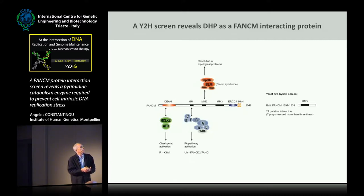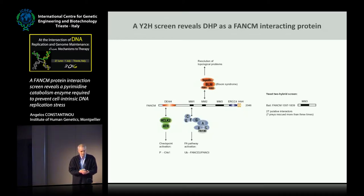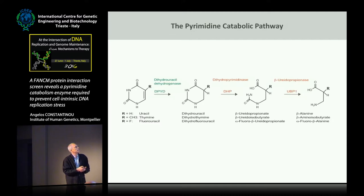We took MMM3 as bait in a two-hybrid screen and retrieved dehydropyrimidinase as a likely FANCM-interacting protein. So what is it? This is a tetrameric metalloenzyme that is implicated in the second step of pyrimidine degradation.